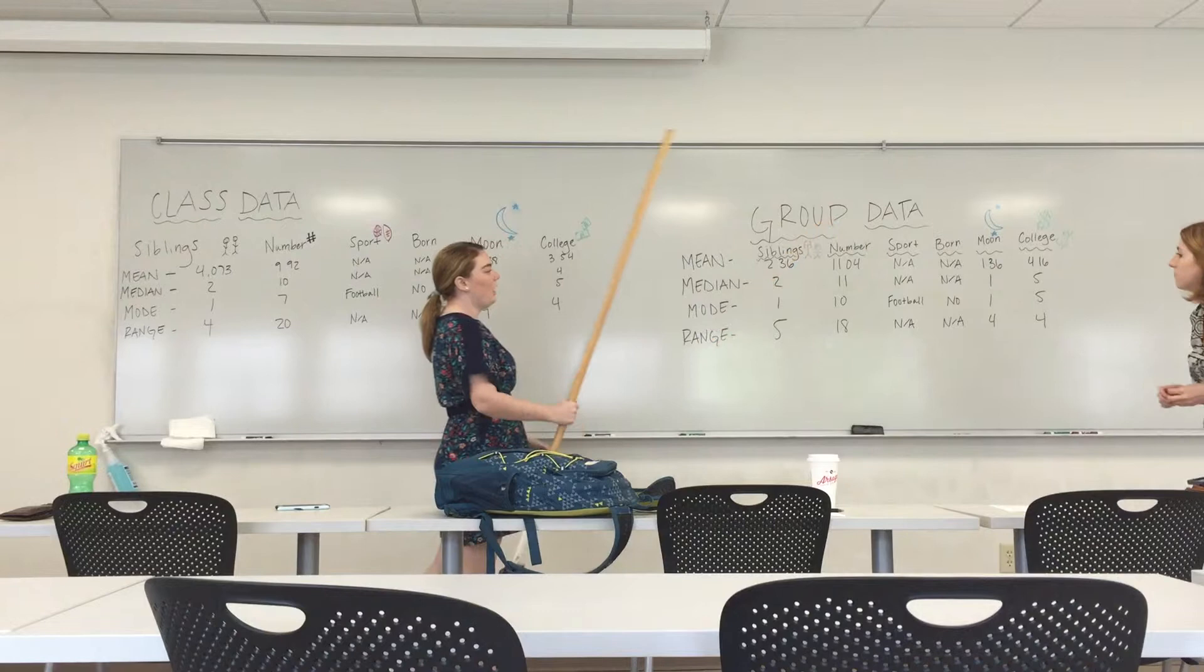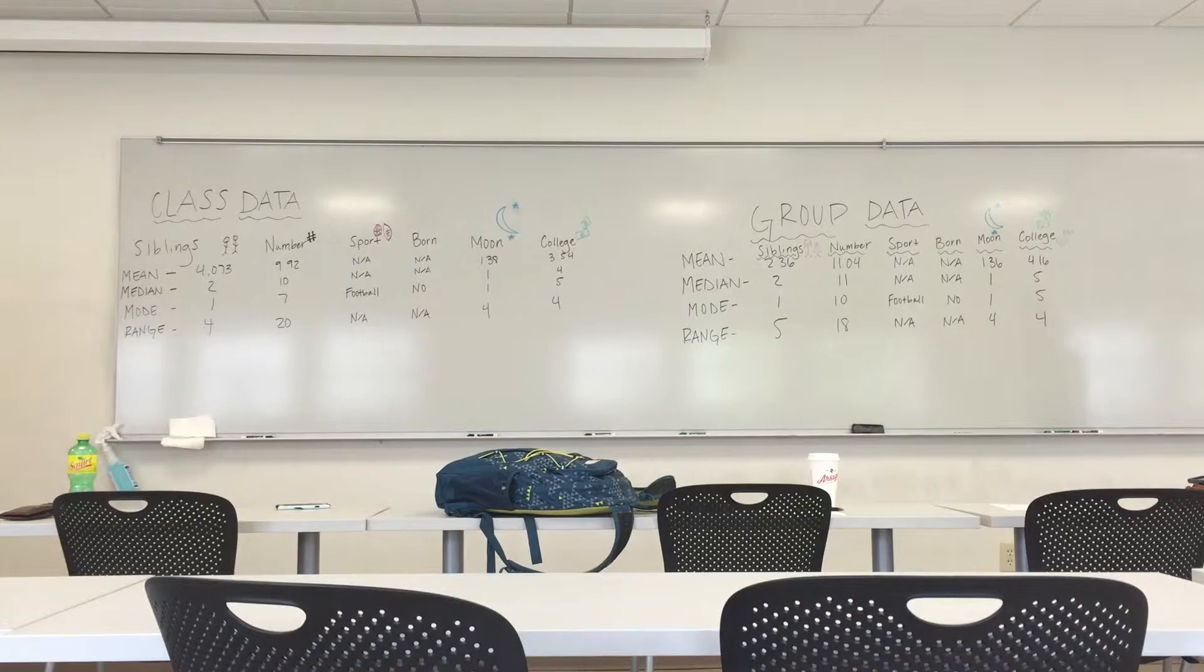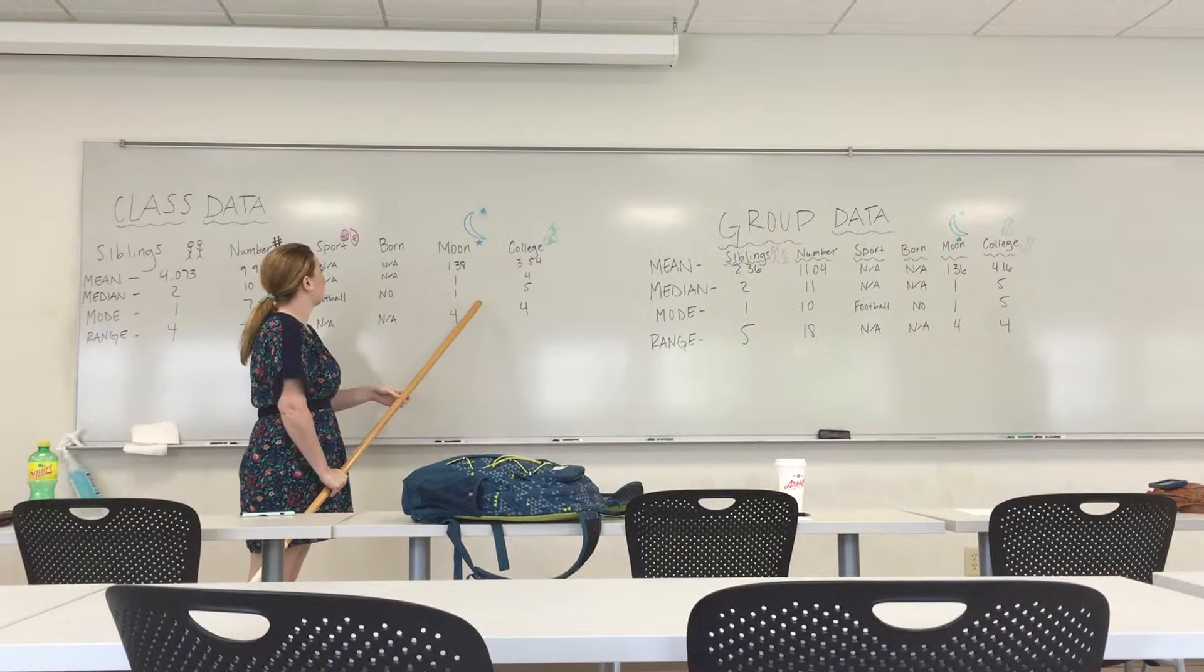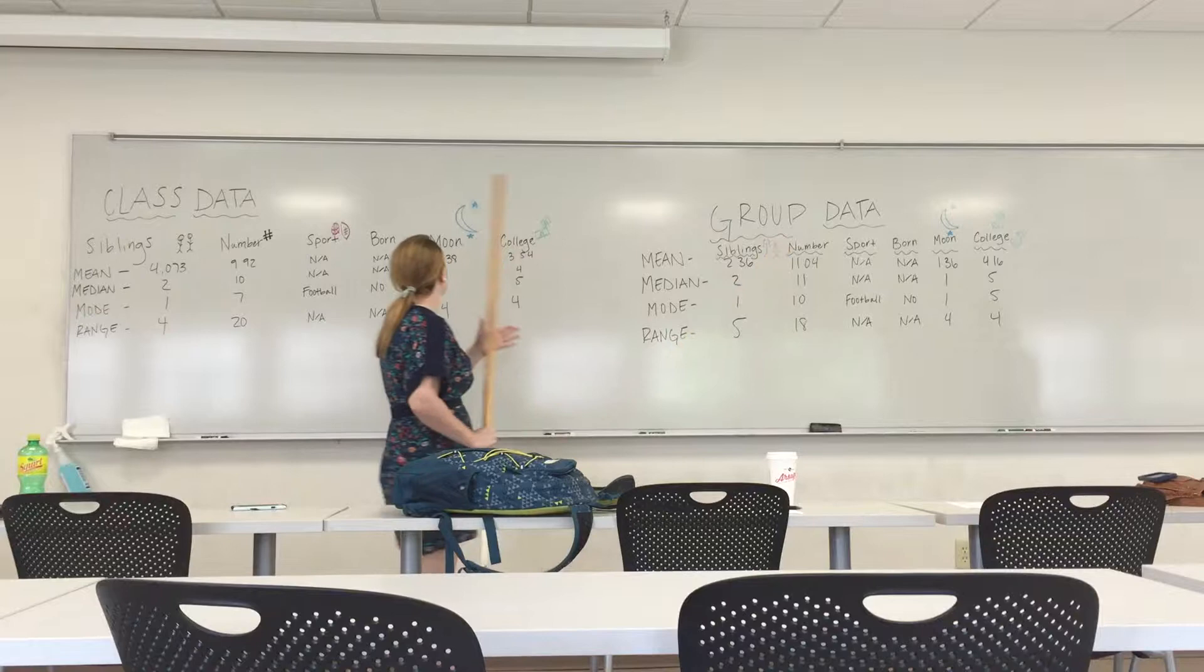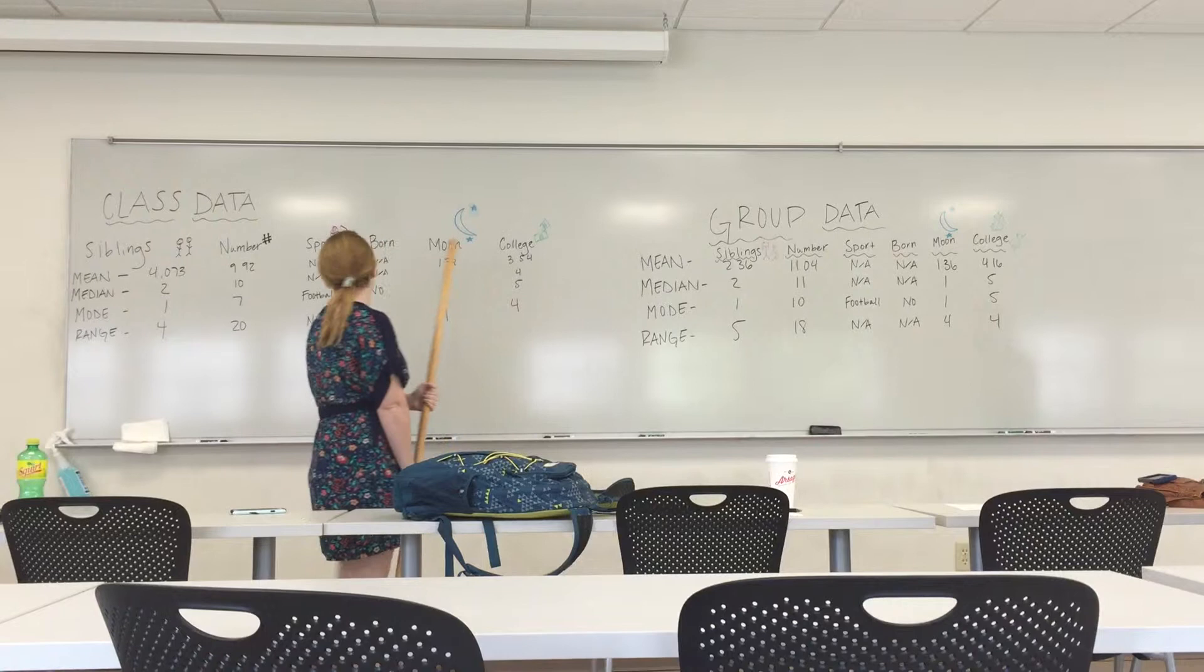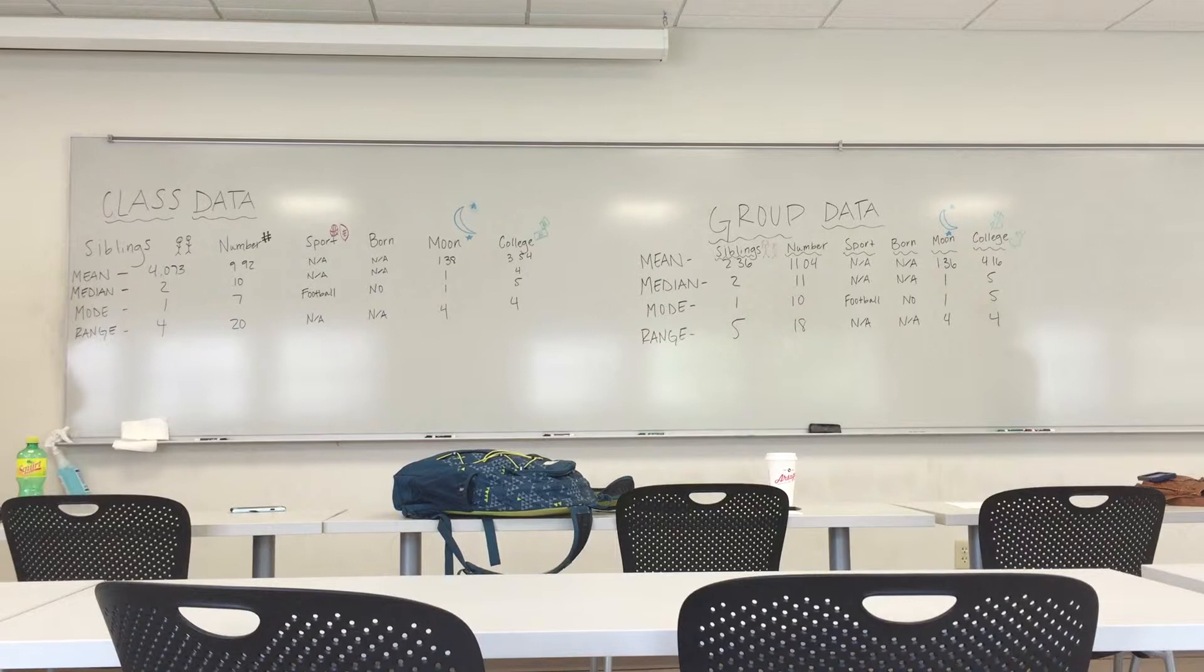Which were questions that you either strongly agree five or strongly disagree one. And those numbers appear to be very similar between just our group, or I'm sorry, the class and then our group. I mean, for the first one, we have 1.38 and 1.36, and both four for the range at the bottom. So both of those questions appeared to have very similar numbers and answers, which was interesting.